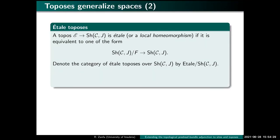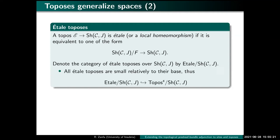We also want to generalize the notion of étale topological space. We already have a notion here of étale topos. A topos over a base is said to be étale — or equivalently a local homeomorphism, as the terminologies are equivalent — if the topos is equivalent to one of this form: equivalent to a slice of our base topos. Also, this geometric morphism is the canonical geometric morphism to the base, whose adjoints are the dependent product, the pullback functor, and the dependent sum. We denote the category of étale toposes over a base with Etal over Sh. All étale toposes are small relative to the base, so we have this inclusion.